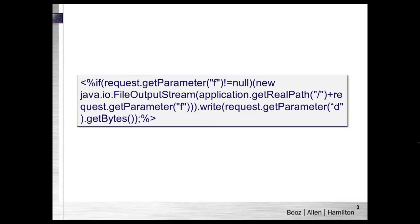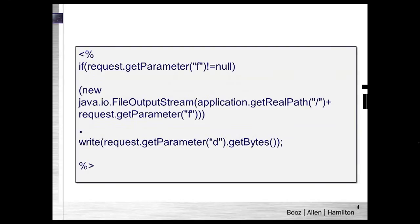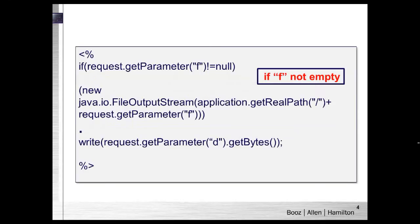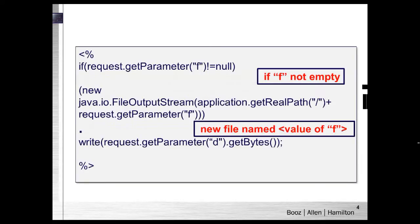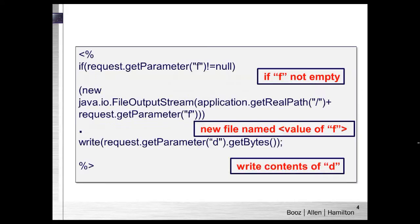To start off the discussion, I'm going to place a script here on the screen. As an analyst, I'd like you to assume you found this script on a public-facing server, and your goal is to determine what it allows an attacker to do if they browse to a page with this code. This is, in fact, a fully functional Java-based web shell. It checks if the parameter F is not equal to null, creates a new file with a value equal to parameter F, and writes to that file the contents of parameter D.